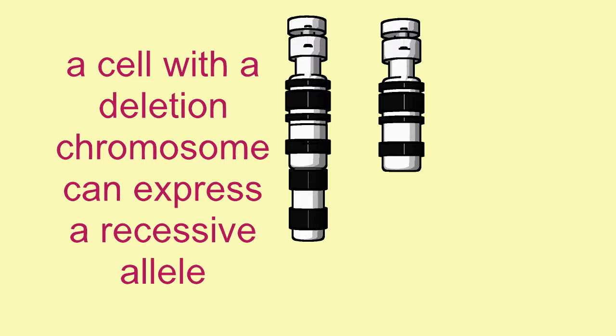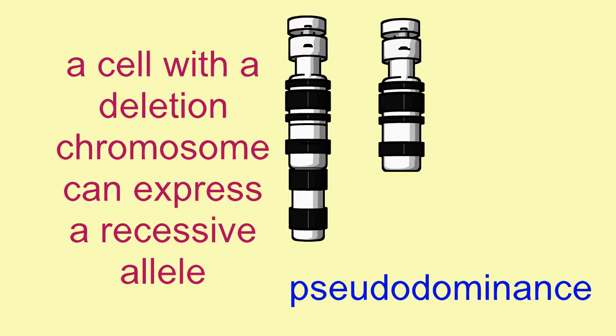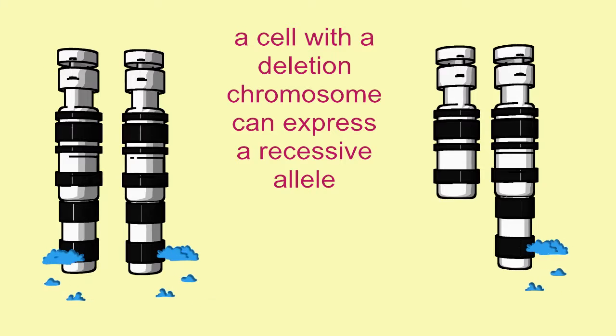Missing the genes on the corresponding region of the deletion chromosome, recessive alleles will be expressed in a phenomenon known as pseudodominance. Even if there are no mutations in these genes,